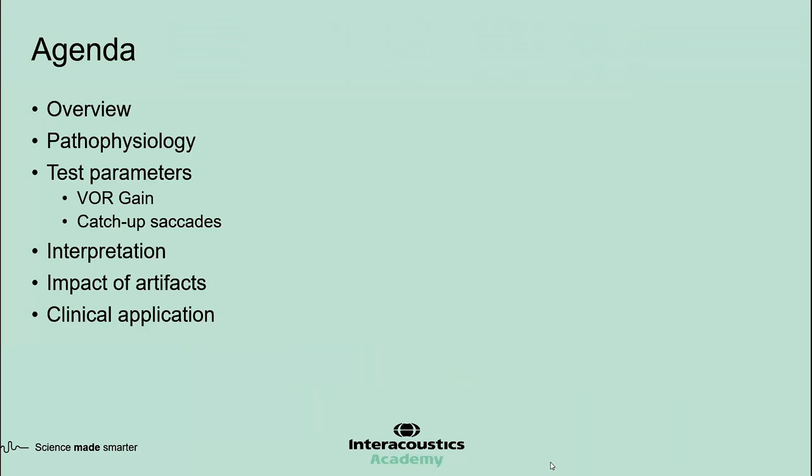After a brief overview, we will talk about the pathophysiology of VHIT. Then we will review what test parameters are measured and calculated. After that, we will go over the interpretation of the test, the impact of artifacts, and the clinical value of the test.